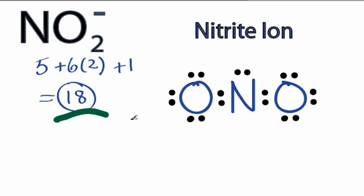So we've used all 18 valence electrons, the oxygens each have 8 valence electrons, but the central nitrogen only has 6, so we're going to have to fix that.